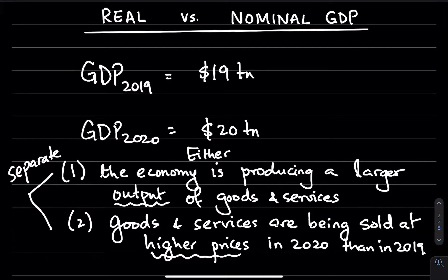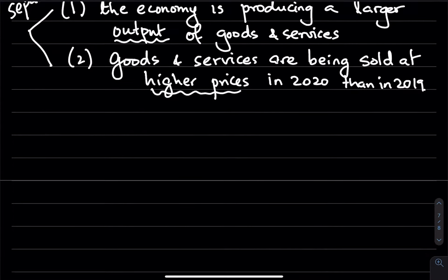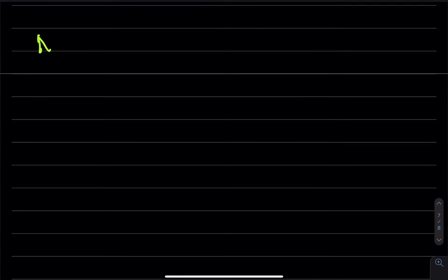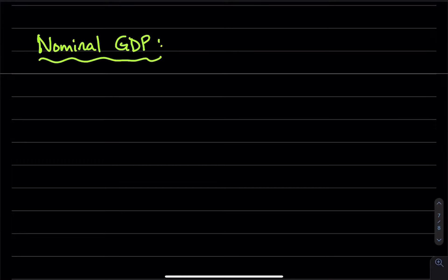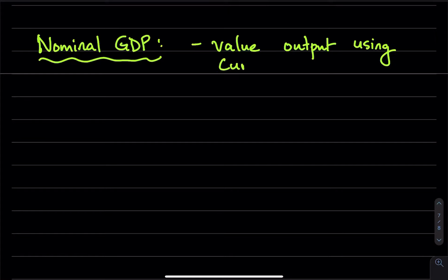So to do this, economists use a measure called real GDP. Nominal GDP is going to value output using current prices and it does not correct for inflation.